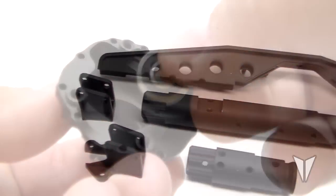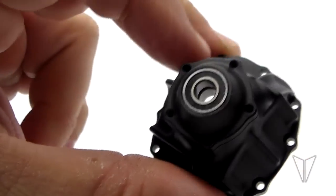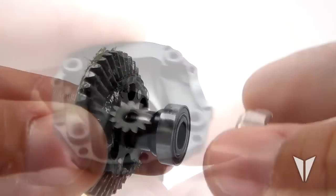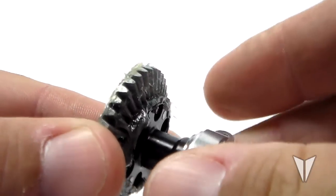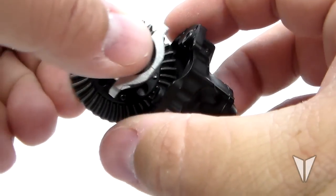I like to start out by installing the included bearing in the third member along with the transplanted stock output bearing from your old axle. Next we can install your pinion gear and install the bearing retainers on your existing spool. Once those are in place you can bolt the ring gear assembly into the third member.